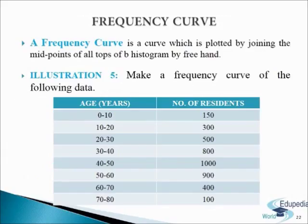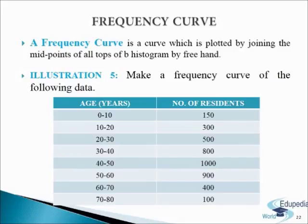Frequency curve: it is just a variant of polygon. A frequency curve is a curve plotted by joining the mid-points of all tops of a histogram by free-hand smooth curves, not by straight lines. Area of a frequency curve is equal to the area of a histogram or frequency polygon of a given dataset. While drawing a frequency curve, we should eliminate angularity of the polygon. Accordingly, points of a frequency polygon are joined through a free-hand smooth curve rather than straight lines. The basic difference between a frequency polygon and a frequency curve is that both are drawn by joining the mid-points of all tops of a histogram, but in a frequency polygon the points are joined using a foot rule to make straight lines, whereas in a frequency curve the points are joined using a free hand.